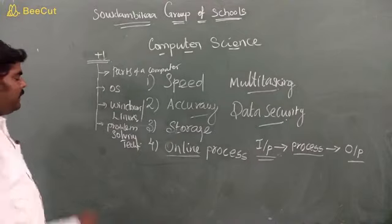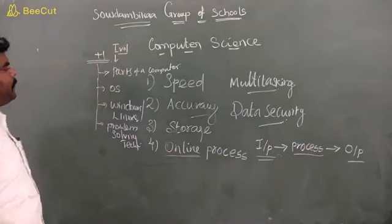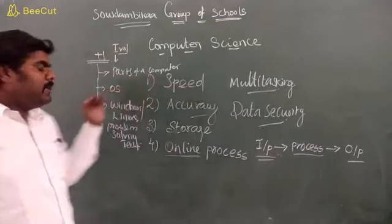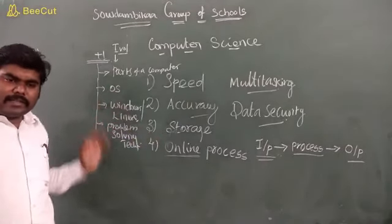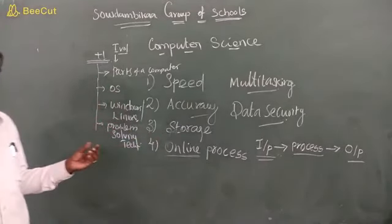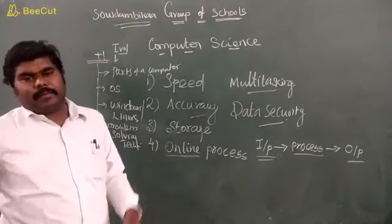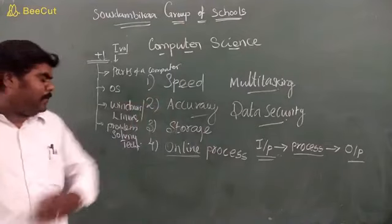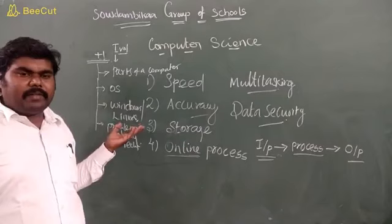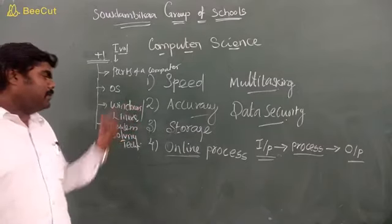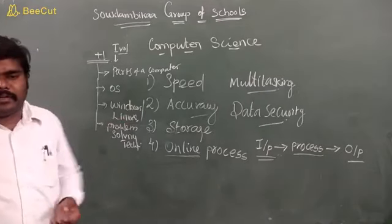First volume comes: parts of the computer, operating system, networking, architecture of the computer. We are having basic knowledge about the computer, history of computers. After that, Windows operating system, Linux operating system, mobile operating systems like Android. Problem solving techniques also comes under the first volume.